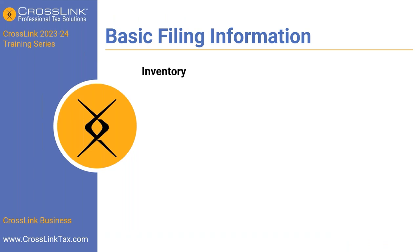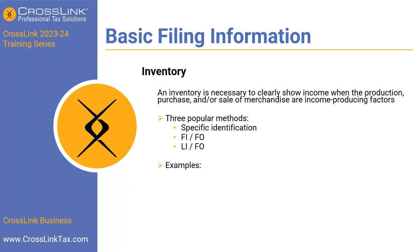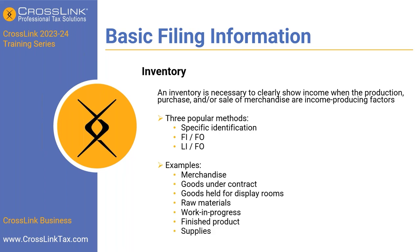Inventory is necessary to clearly show income when the production, purchase, or sale of merchandise are income-producing factors. There are three popular methods: specific identification, first-in first-out (FIFO), and last-in first-out (LIFO). Examples of items that belong in inventory include merchandise, goods under contract, goods held for display rooms, raw materials, work in progress, finished products, and supplies.